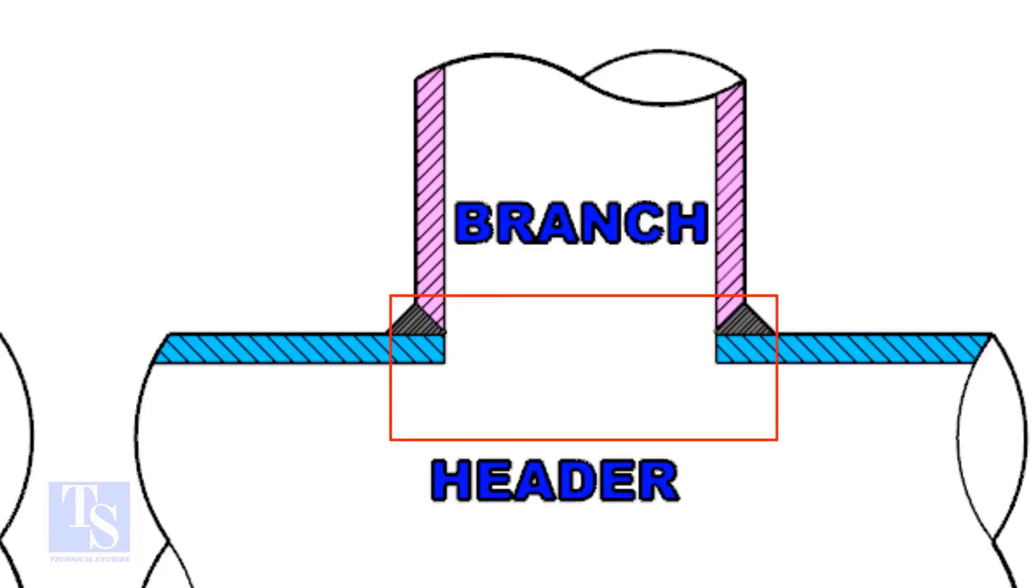On the header pipe, a hole is made. The diameter of this hole is equal to the inside diameter of the branch pipe.